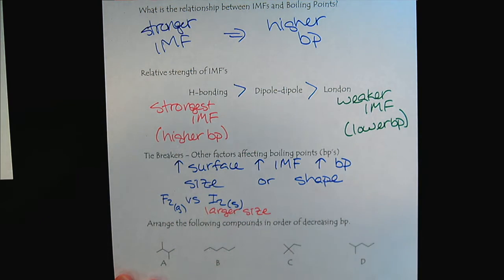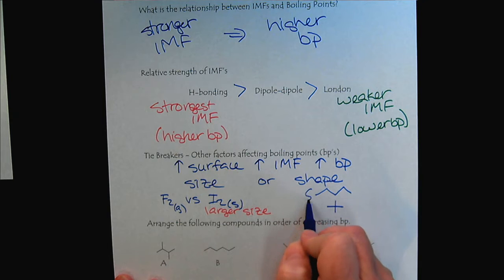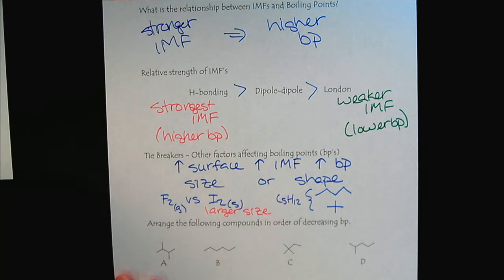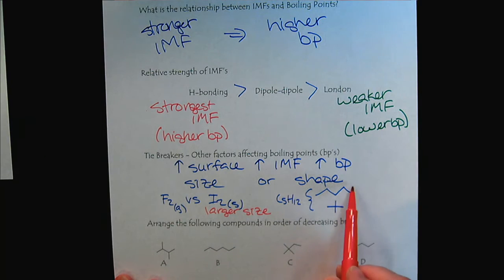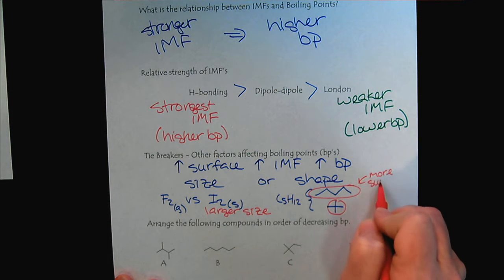And then for shape, we looked at the example where we had two structural isomers, both C5H12, and we observed that the straight chain has more surface area than the branch. So more surface area.